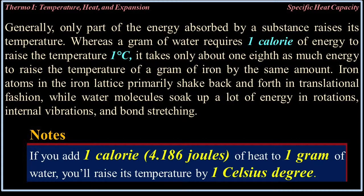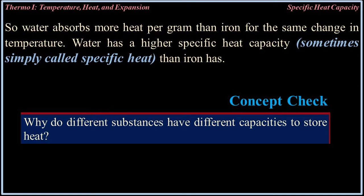Whereas a gram of water requires one calorie (4.186 joules) to raise its temperature one degree Celsius, it takes only about one-eighth as much energy to raise the temperature of a gram of iron by the same amount. Iron atoms in the iron lattice primarily shake back and forth in translational fashion, while water molecules soak up a lot of energy in rotations, internal vibrations, and bond stretching. So water absorbs more heat per gram than iron for the same change in temperature — water has a higher specific heat capacity than iron.